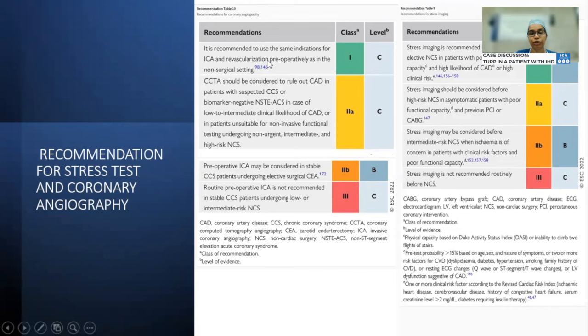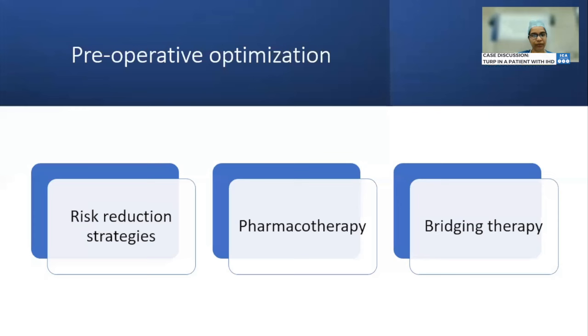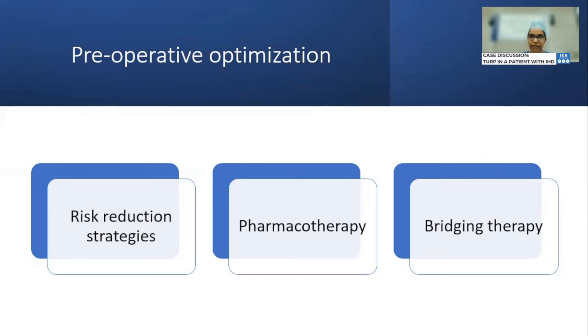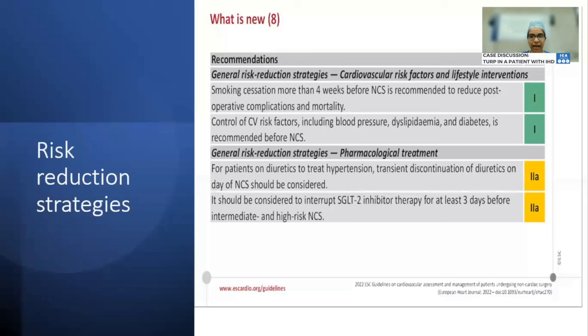For stress imaging, it is recommended in patients with poor functional capacity and high likelihood of coronary artery disease or high clinical risk. Coronary angiography is recommended in the same indications as in non-surgical settings, managed by the cardiologist. Preoperative optimization follows a three-limbed approach: risk reduction strategies, pharmacotherapy, and bridging therapy. General risk reduction includes stopping smoking four weeks prior and controlling cardiovascular risk factors like dyslipidemia, blood pressure, and diabetes.